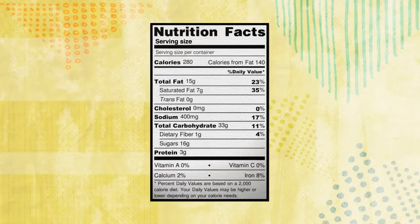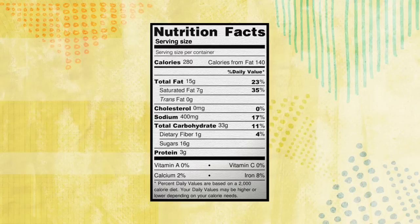Next, you will learn how many calories we will eat per serving and how many calories come from fat. Let's take a look at what else is in this snack. We can see that fat, cholesterol, sodium, carbohydrates, and protein are in this snack.